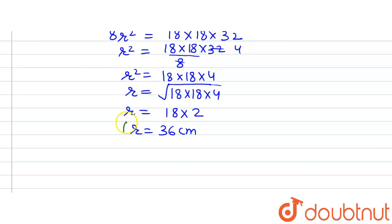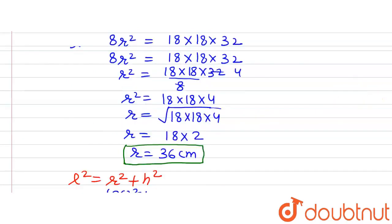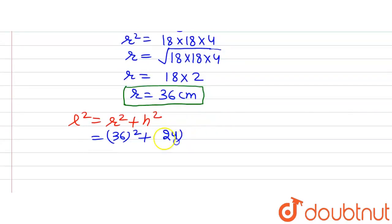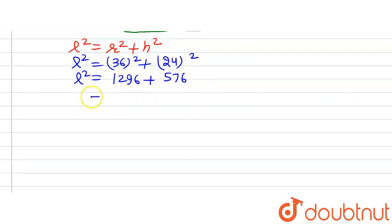This is the answer to the first part — the radius of the cone is 36 cm. Now for the slant height, we use the formula: l² = r² + h². With radius = 36 and height = 24, we get l² = 36² + 24² = 1296 + 576 = 1872. So l = √1872.